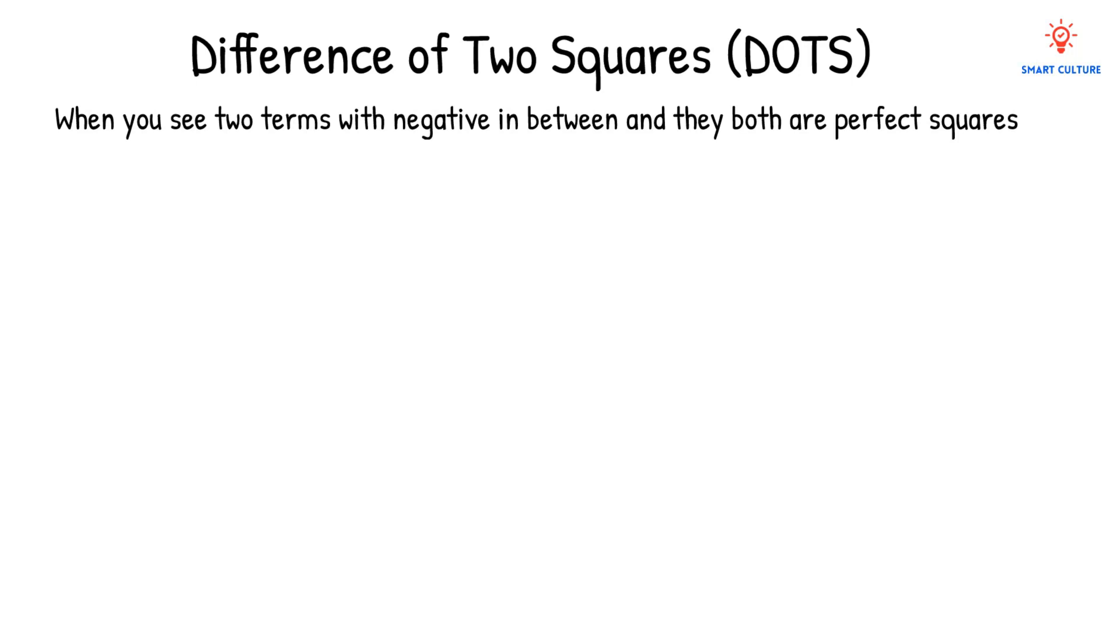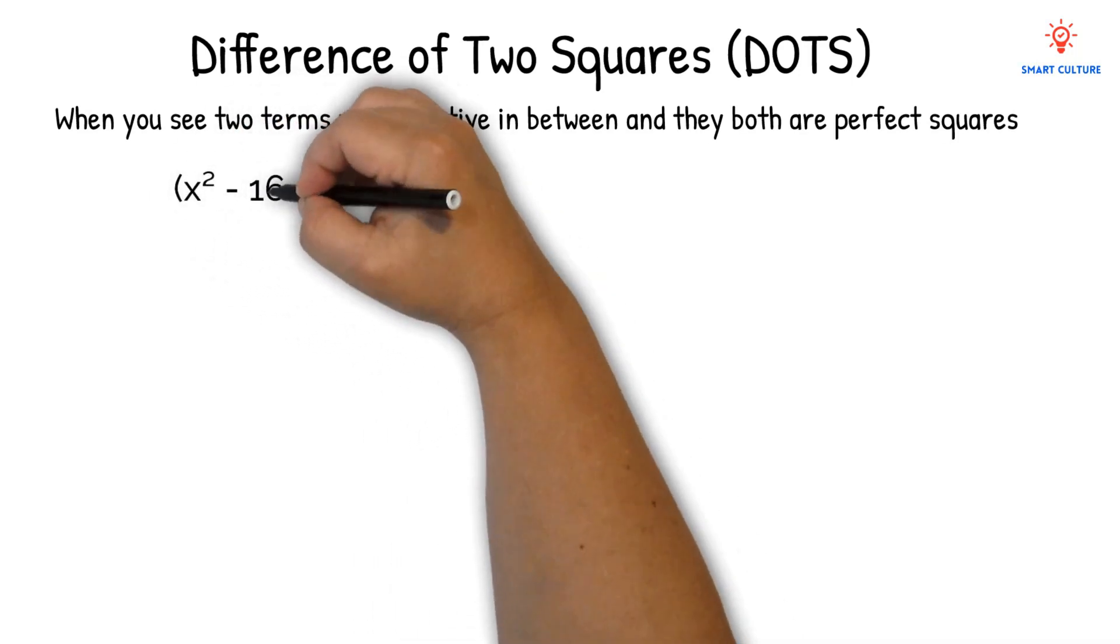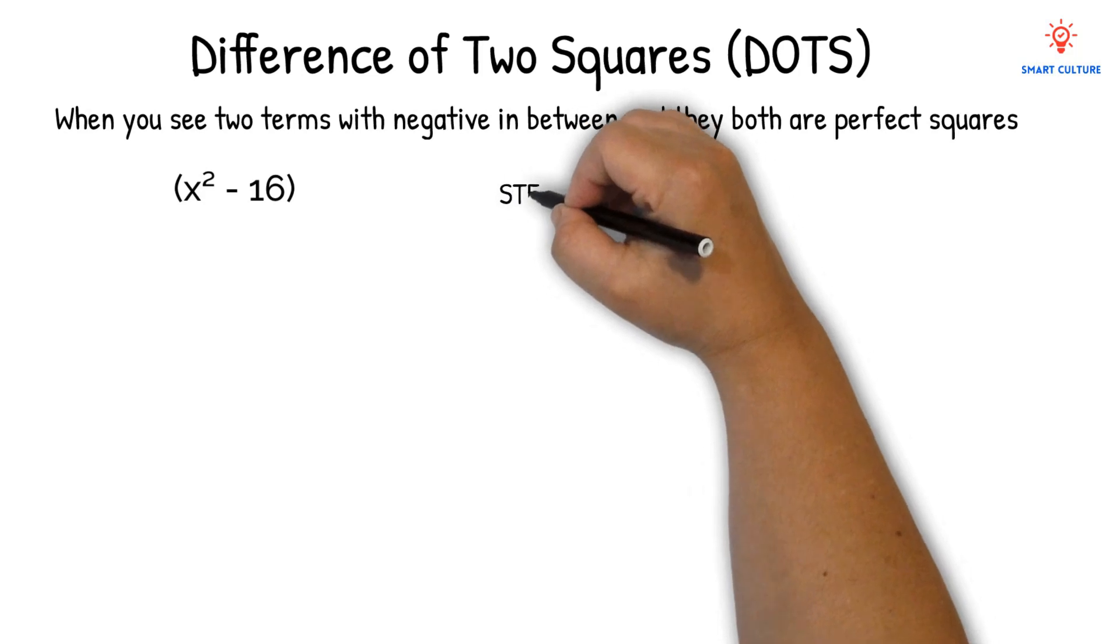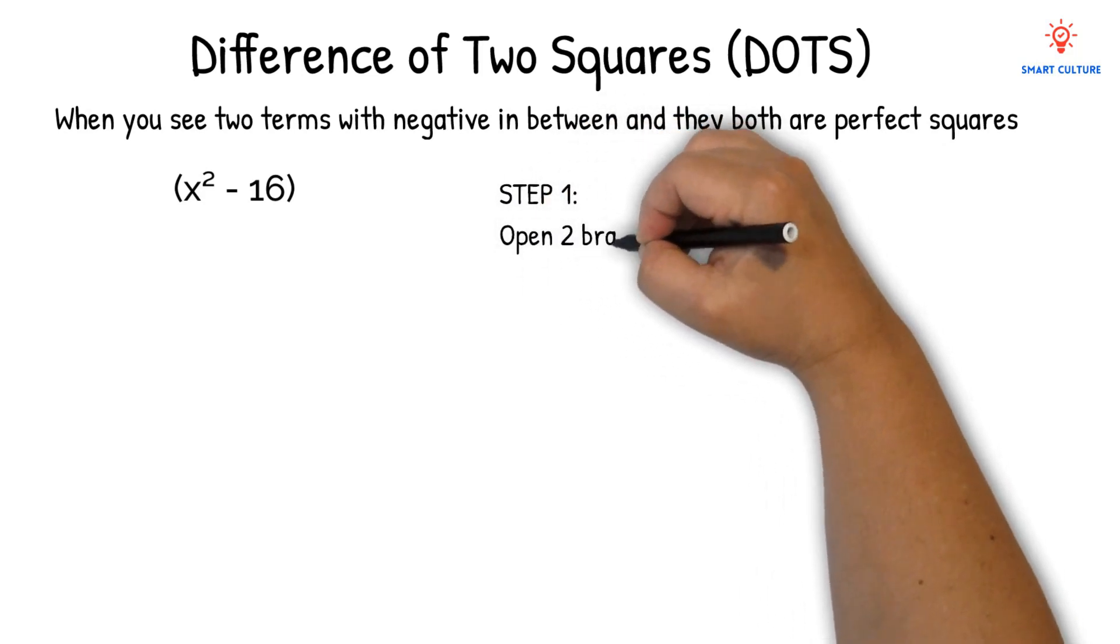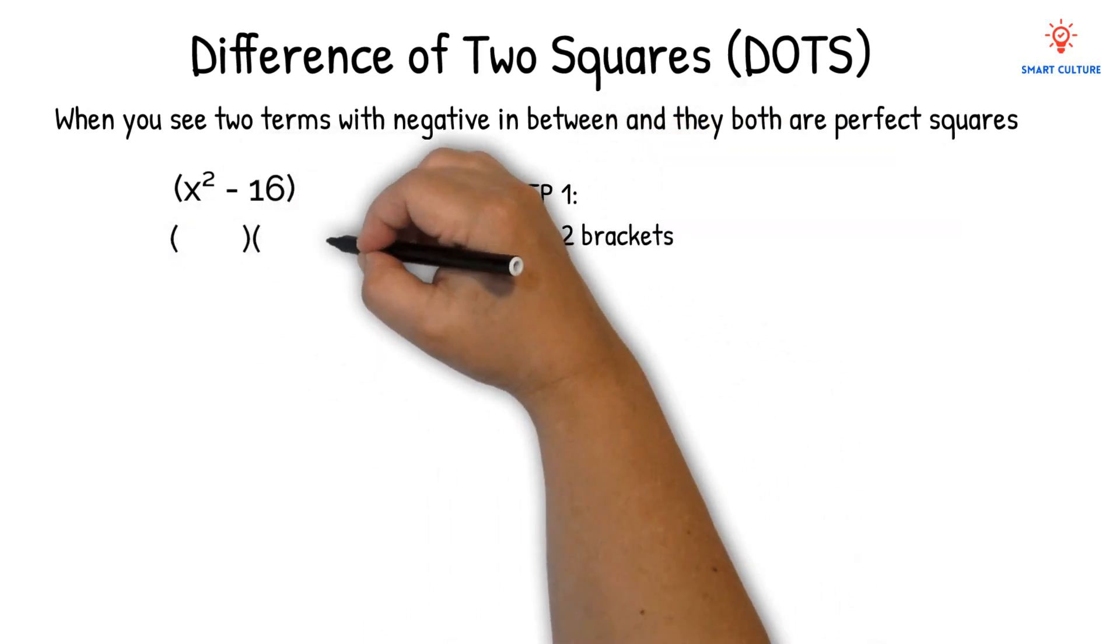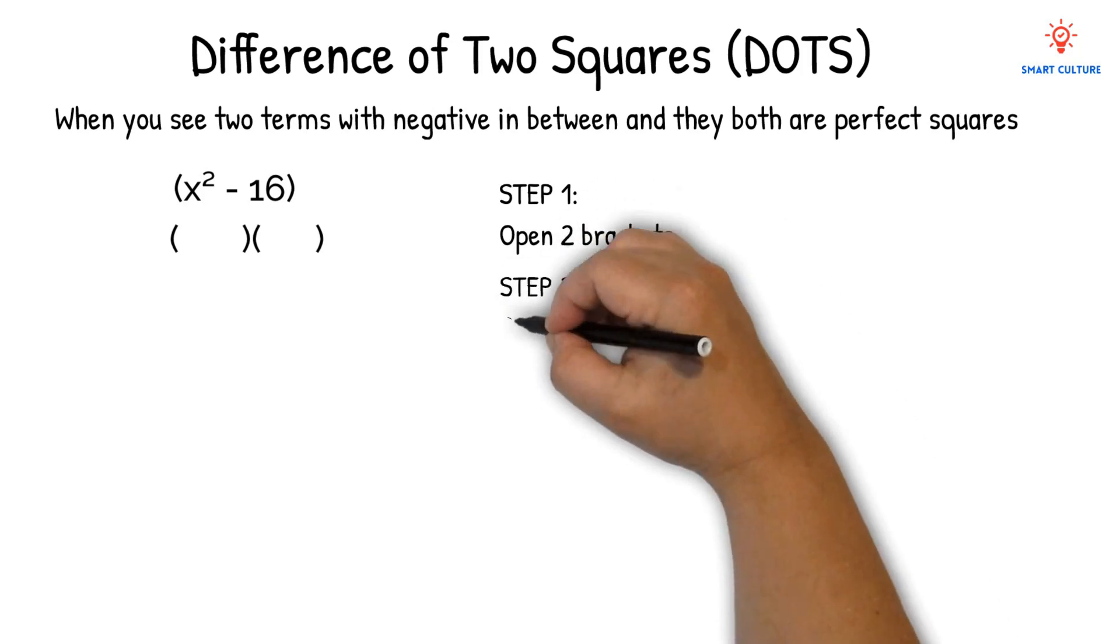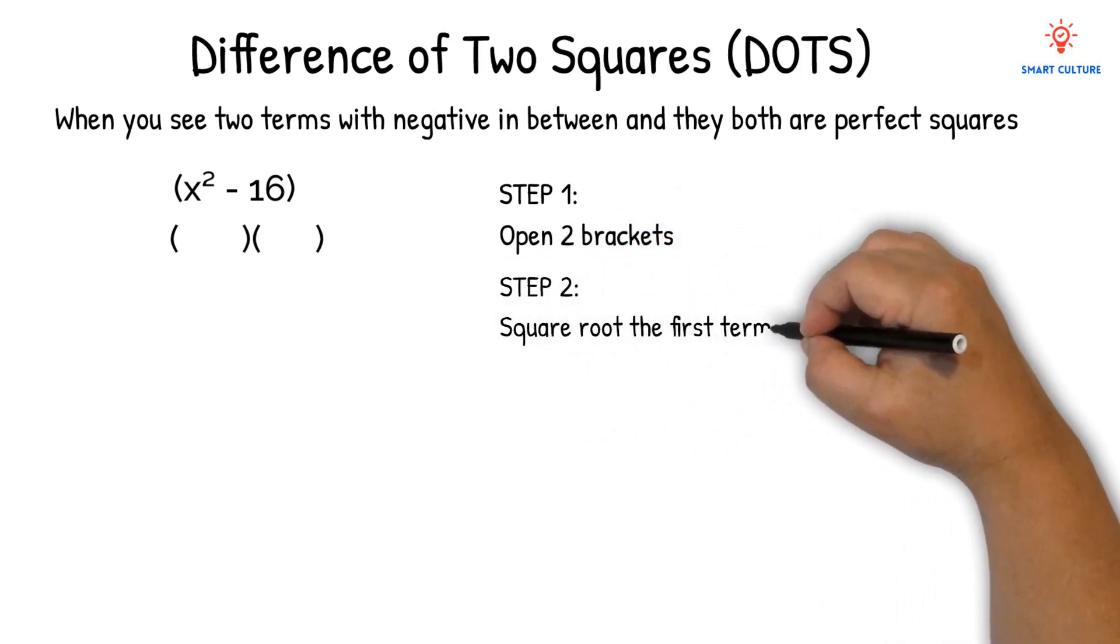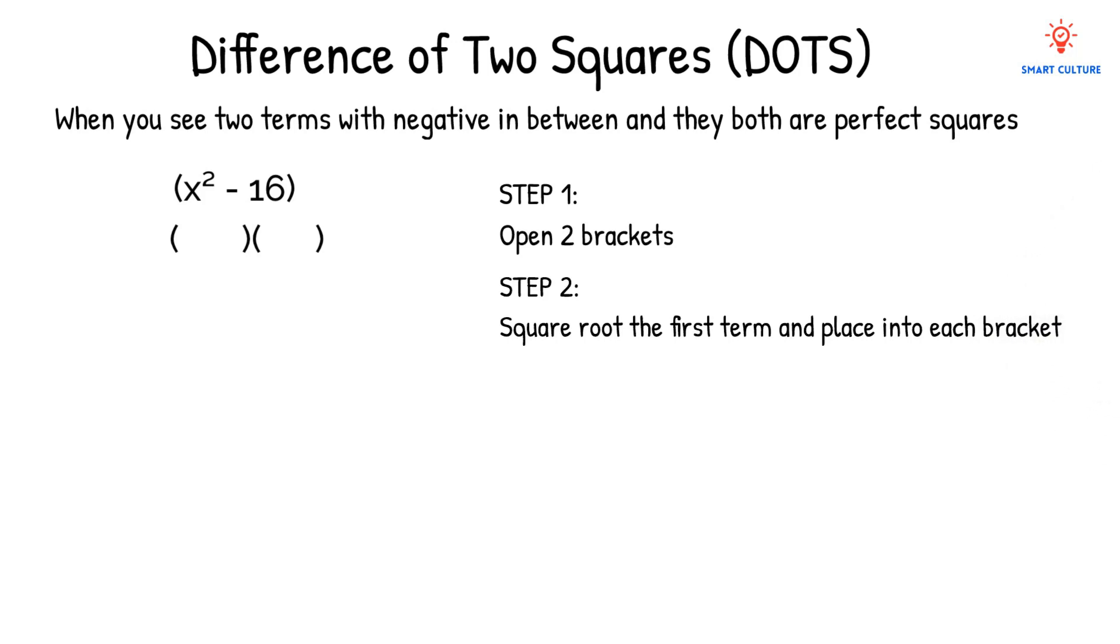Consider this expression. Step 1: You open two brackets. Step 2: You will square root the first term and place it into each bracket.